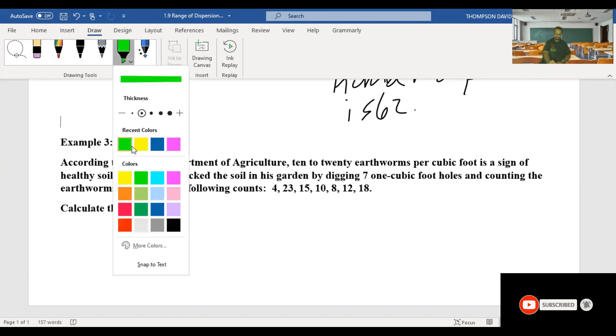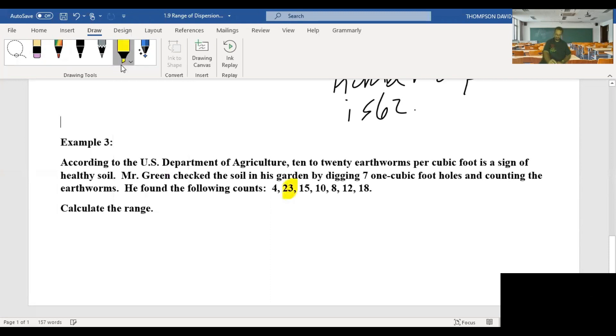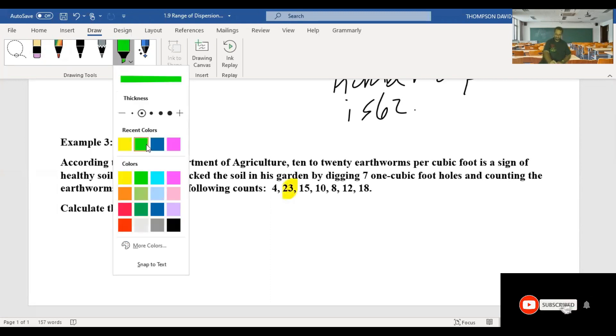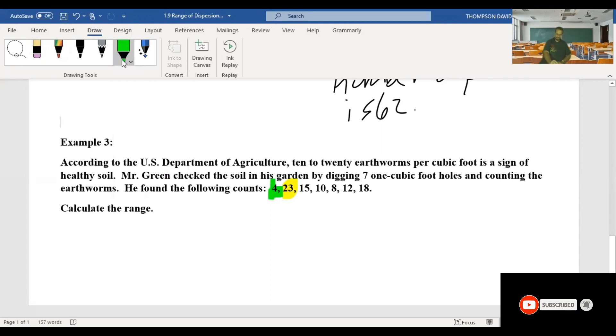So again, we find our largest number, which in this case is 23. We find our smallest number, which is 4. And we find the difference of the two. 23 minus 4 gives me 19.